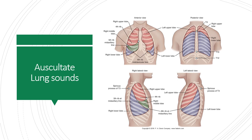Auscultate for lung sounds and develop a pattern for listening. Note that the upper lobes are best heard anteriorly, and the right middle lobe is heard anteriorly and laterally. The lower lobes are heard best posteriorly. Note the location of any abnormal sounds and whether they were present on inspiration, expiration, or both. Ask the patient to cough and reassess sounds like ronchi for clearing with coughing.